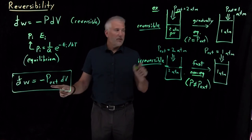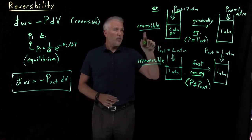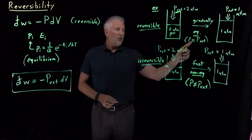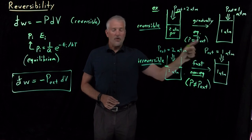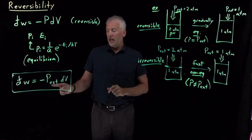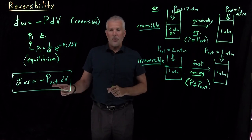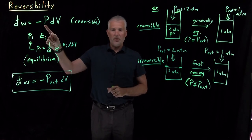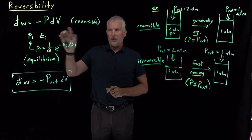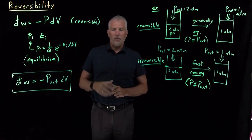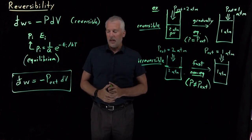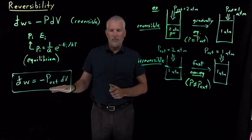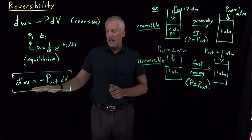If we have the special case of a reversible process where the internal pressure P and the external pressure are the same thing, it's fine to replace the external pressure with the internal pressure. But for the general case where we may be doing something irreversibly, we need to remember to use the external pressure expression.